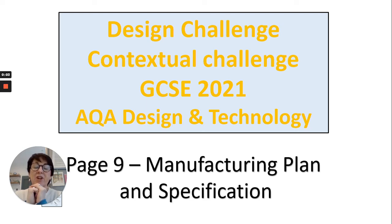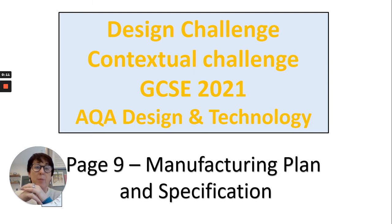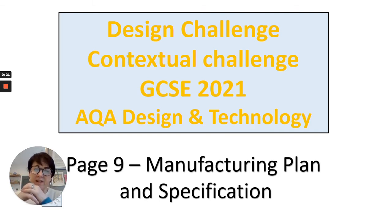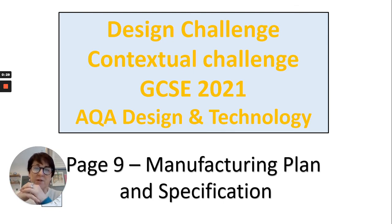Good morning. Today we're going to be looking at manufacturing specification. Now this is quite confusing because it's got the word specification and it seems to repeat a piece of work that you've already done called briefing specification. This comes at the very end of all your prototyping when you're ready to start manufacturing your product. So it is different, and it also comes with its own set of marks. This whole page is worth marks on its own, so it's worth getting right.